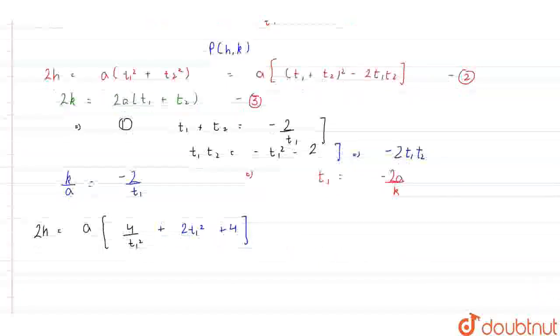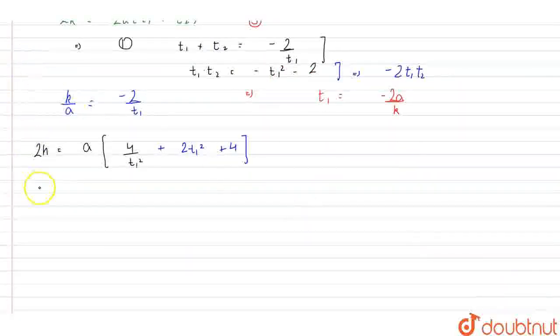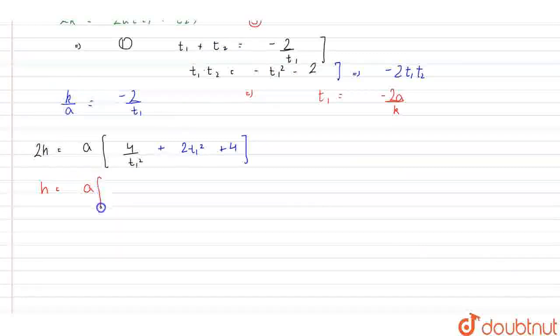Solving this, we will get h is equal to a into twice of k square upon 4a square plus 4a square upon k square plus 2.